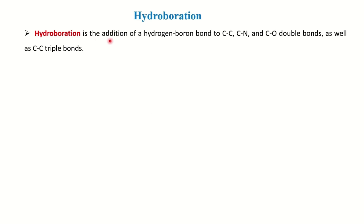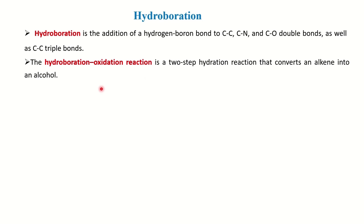Hydroboration is the addition of hydrogen and boron to a C=C, C≡N, or C=O unsaturated bond, as well as to a triple bond — essentially addition of hydrogen and boron across any unsaturation. Hydroboration followed by oxidation is a two-step reaction that converts an alkene into an alcohol. When you have these two reagents together — hydroboration followed by oxidation with H2O2 — your alkene will convert into alcohol.